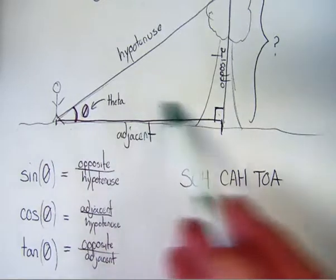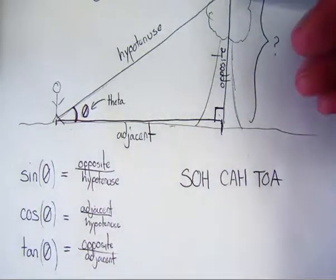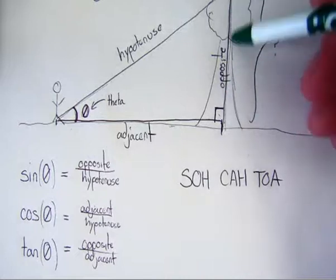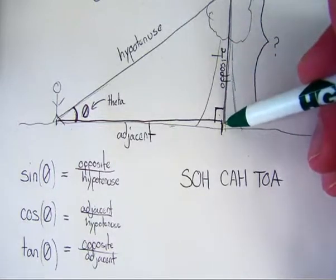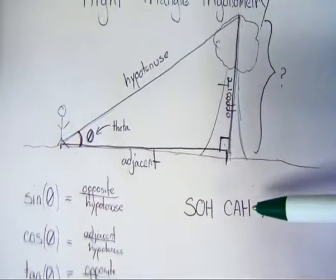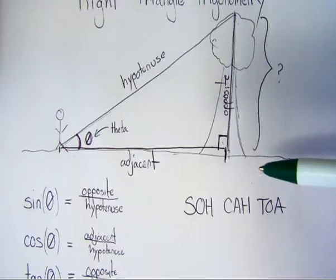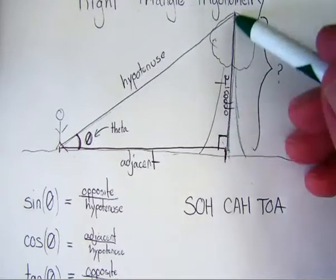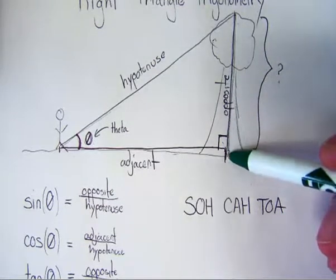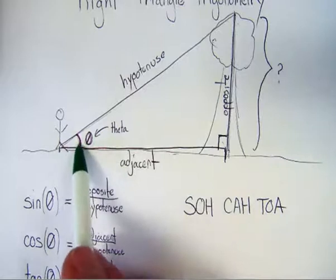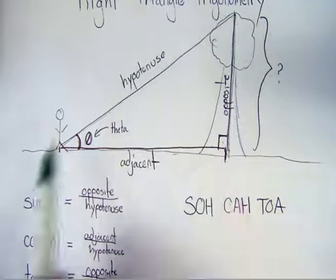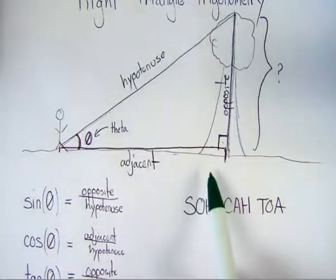So by using these functions, I can find that missing side, and that opposite side can be set up to be the height of whatever object I want. The real-world usefulness of this comes from indirectly calculating the height of any object you want based off of the angle you have to look up to the top of it and how far you're standing from it.